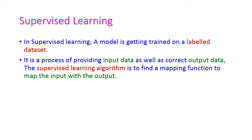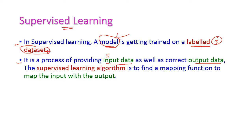Next we will move to supervised learning. In supervised learning, a model is trained on a labeled dataset. The labeled dataset is very important. The dataset may be structured, unstructured, or semi-structured data, but the data should have labels — by means of these labels only the learning model gets trained. It is a process of providing input data as well as the correct output data, and the supervised learning algorithm finds the mapping function to map the input with the output.